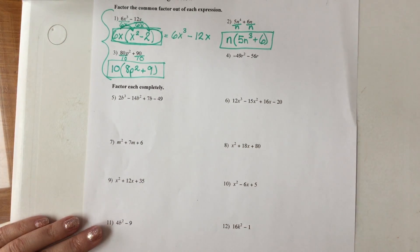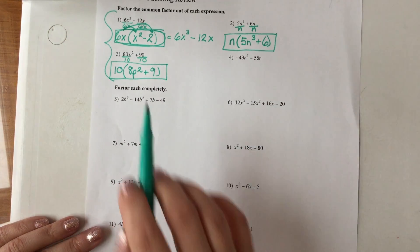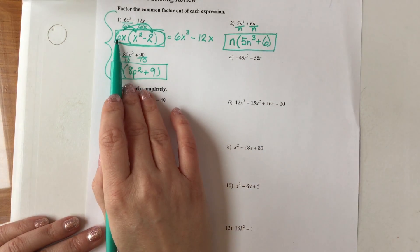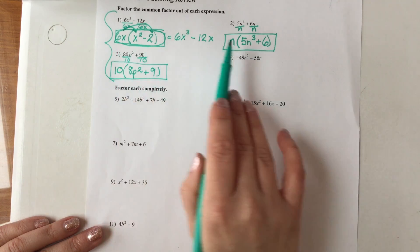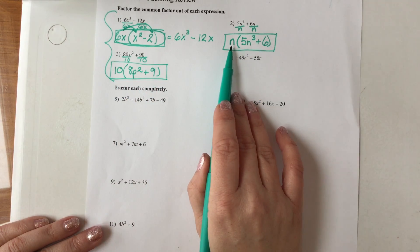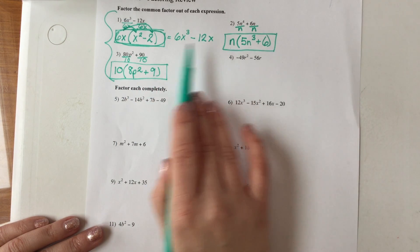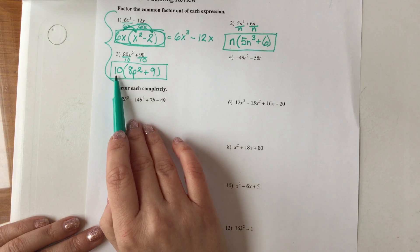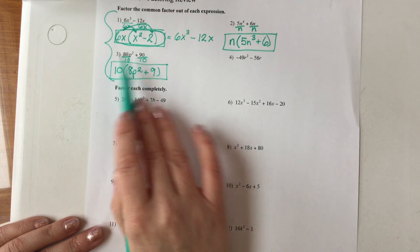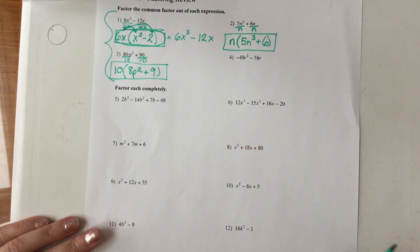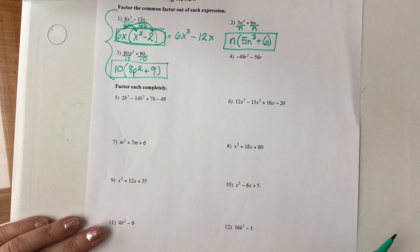With these three examples, I want you to realize that sometimes you can take out a number and a letter, sometimes you may only be able to remove a variable, and sometimes you might only be able to take out a number. Any of those scenarios is okay.